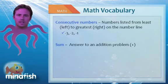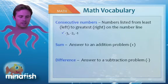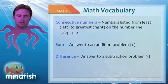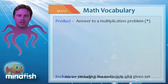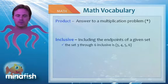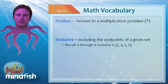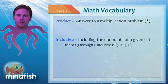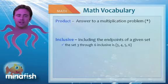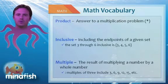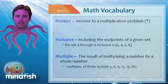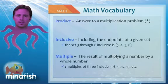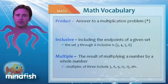Sum means addition or add. Difference means subtraction or subtract. Product means multiply. Inclusive means count - so the set 3 through 6 inclusive would count 3, 4, 5, and 6. For multiple, think multiply. Multiples of 3 are 3 times 1 is 3, 3 times 2 is 6, 3 times 3 is 9, and they go on forever.